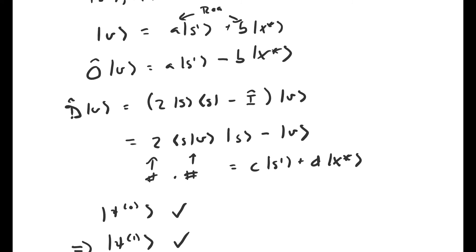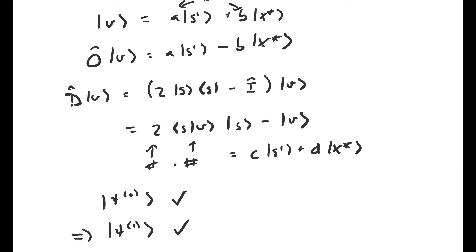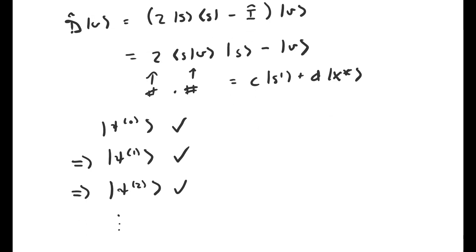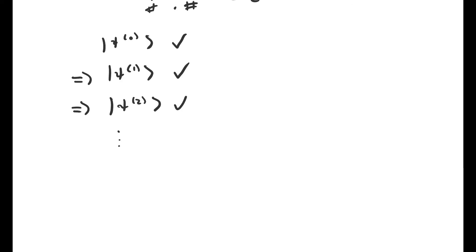And then try to show that acting on v with the operator O produces another vector that can be expressed as a linear combination of s prime and x star also with real coefficients. And do the same thing for D. The vector we start with, s, can be expressed as a linear combination of s prime and x star with real coefficients. And so that means that all future vectors we produce, psi 1, psi 2, and so on, can also be expressed as linear combinations of s prime and x star with real coefficients.